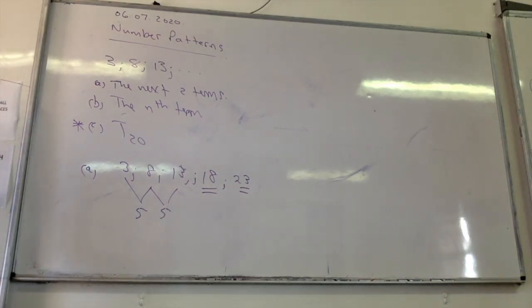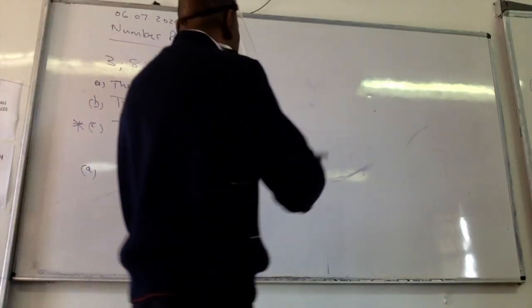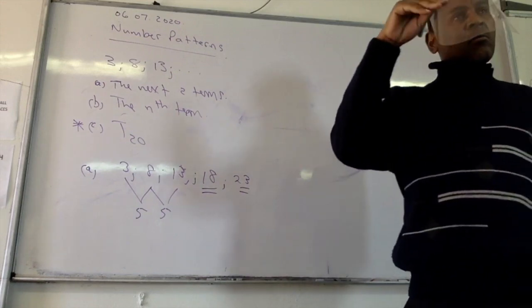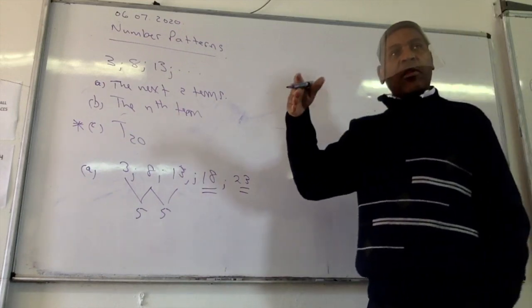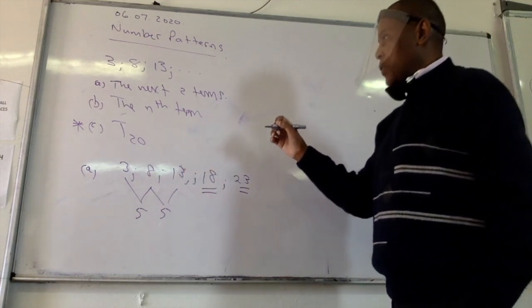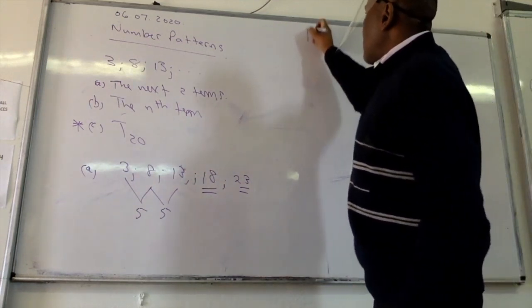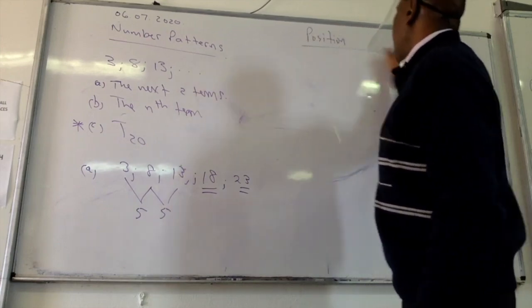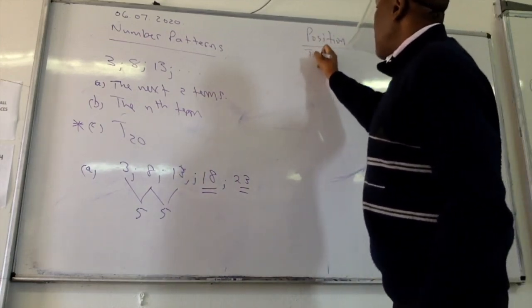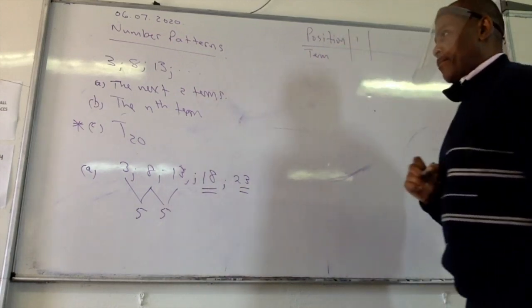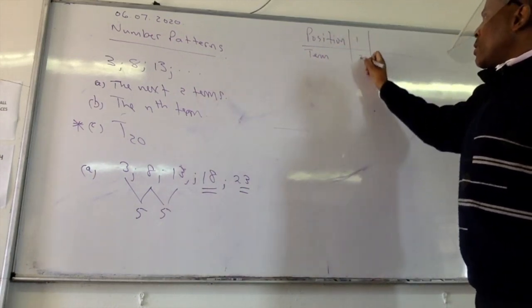Then it says Tn. I taught you a method because I like the method because it is quite the same method that you use for relations. So I say think about the position of the term, right, and then think about the term itself. So what is in position one? Three. Three is in position one.